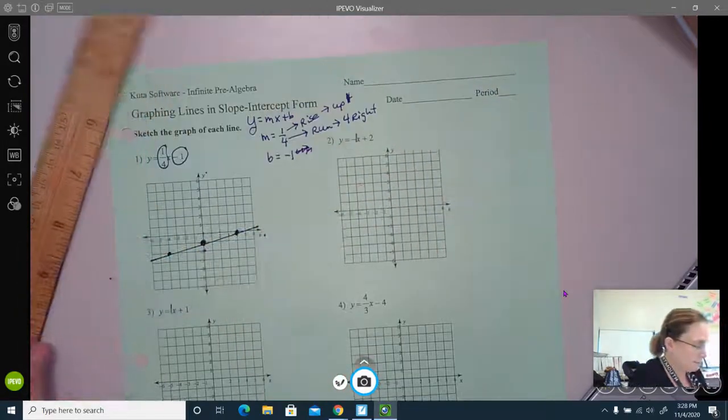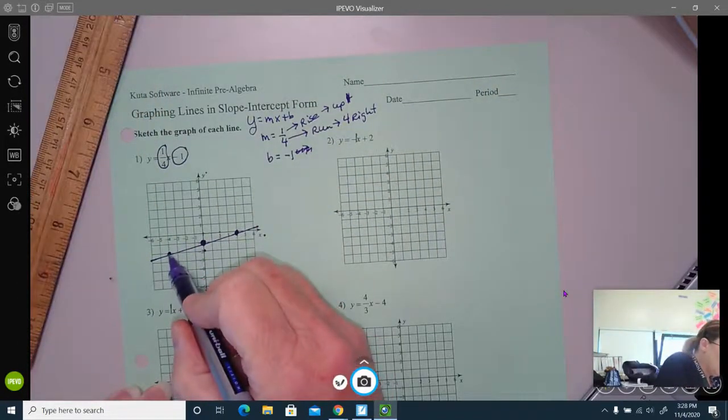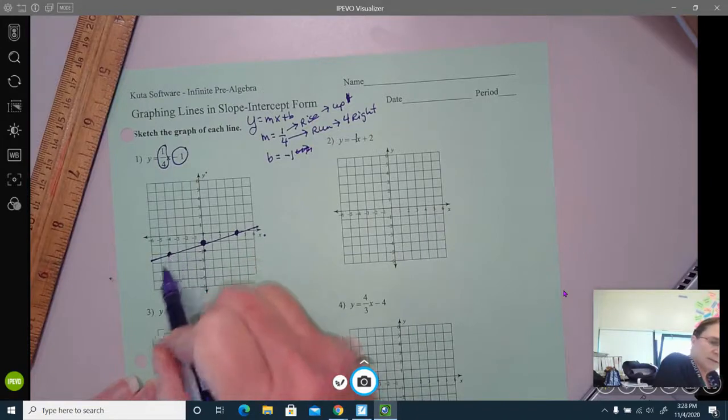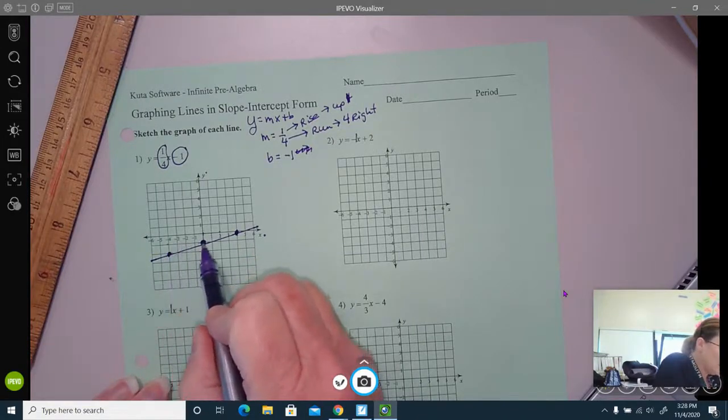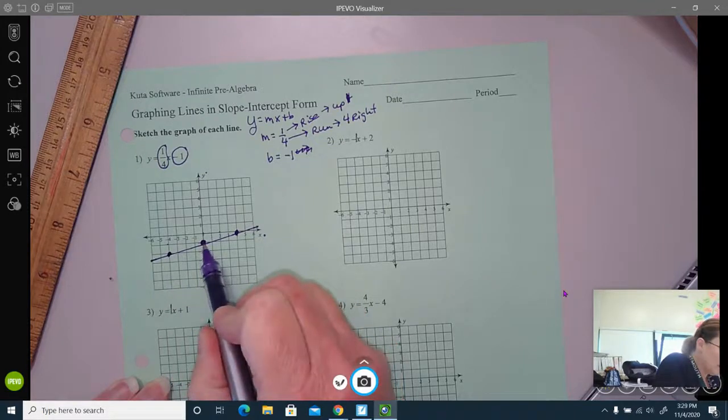And if I want to test it out, I can come over here at the point on the left. Up one, four to the right. I'm back at the perfect point. Up one, four to the right. I'm at the perfect point.